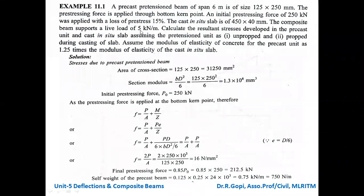The composite beam supports a live load of 5 kN per meter. Calculate the resultant stress developed in the precast unit and cast in-situ slab. Assume the pretensioned unit is unpropped during casting of the slab. The modulus of elasticity of concrete for the precast unit is 1.25 times that of the cast in-situ slab, since higher strength concrete has a higher modulus of elasticity.